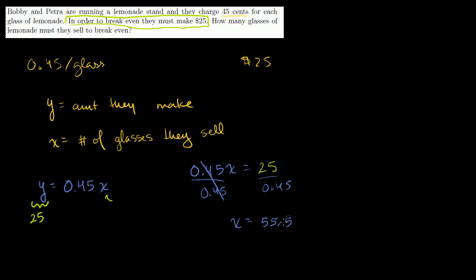But you can't sell half a glass, or we're assuming you can't sell half a glass. So the answer to that, they must sell 56 glasses. Because you can't sell half a glass, I'm assuming. So they need to sell 56 glasses to break even.